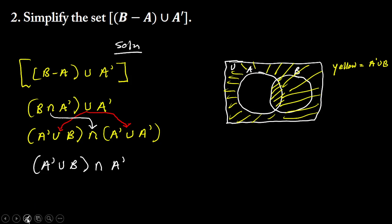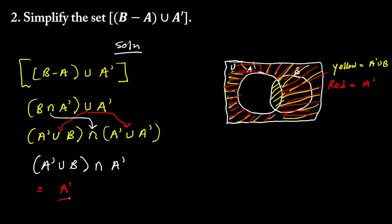Now let me illustrate A' alone, shown in red. A' alone is the red region. Looking at where yellow and red meet — yellow represents A' union B and red represents A' — they meet exactly where A' is. So the intersection of A' union B with A' is simply A'. Therefore our final answer is A'.